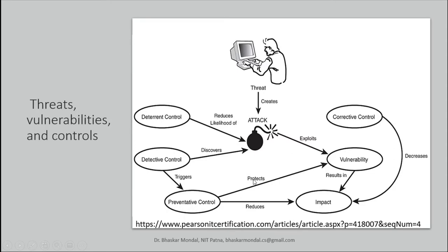Detective control triggers preventive control. Preventive control protects the vulnerability. If you can detect that traffic or a packet coming into your network can lead to some attack, you can trigger preventive control which protects your vulnerability. Also, knowing beforehand that it is going to happen, you can reduce the impact of the attack as well. That is the overall picture of the relation among all these controls.